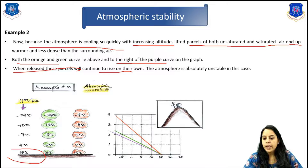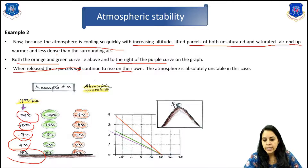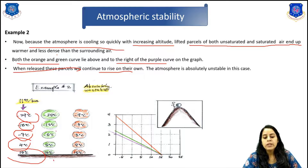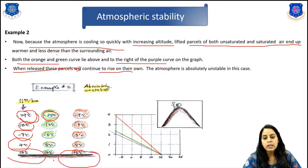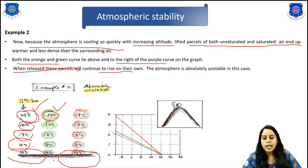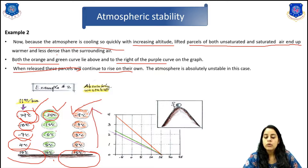Because this is an unstable condition, when released these parcels will continue to rise on their own — the atmosphere is absolutely unstable in this case. The environmental temperature starts at 15 degrees and reduces by 11 degrees per kilometer. The dry parcel cools at 10 degrees Celsius per kilometer while the moist parcel cools at 6 degrees Celsius per kilometer. In both cases the parcel is warmer than the environment, so the air rises to the upper atmosphere — this is an unstable condition.